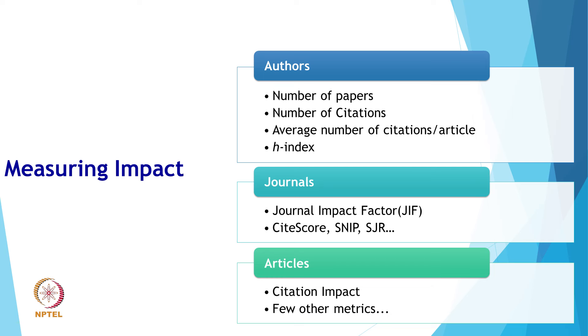Currently there is no one tool or system that completely measures the impact of research publications. Each database or tool uses its own measurement system, indices, data, and authority files, and it is difficult to use these tools to compare across disciplines that have different research and publication practices. For measuring author impact we generally use number of papers, number of citations, average citations, and H index. For measuring journal impact there are journal impact factor, CiteScore, SNIP, SJR, and more. For measuring article impact we use citation impact and altmetrics.